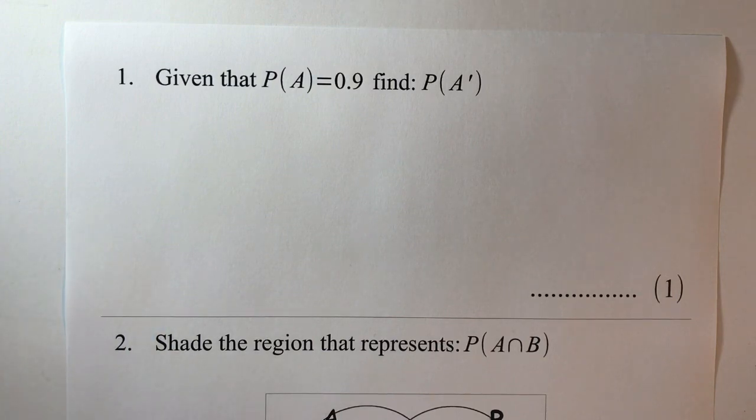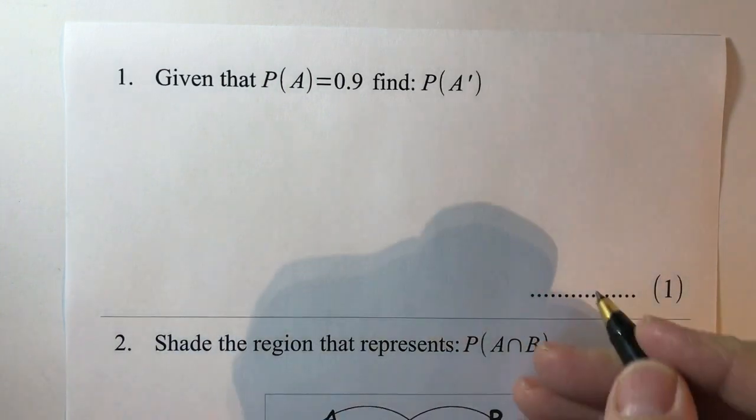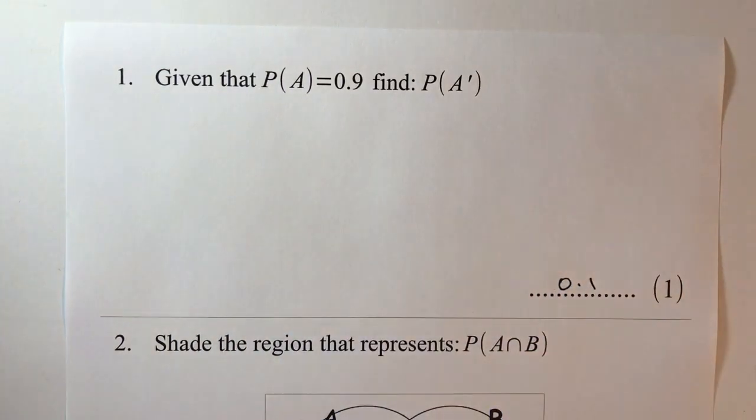Now this particular one, the first one says given that the probability of A equals 0.9, find the probability of not A. Well in that particular case we're basically saying that 90% of the time it's going to be a value of A, when it's not A it's going to be 10% of the time or to put that as a decimal we would write that as 0.1.